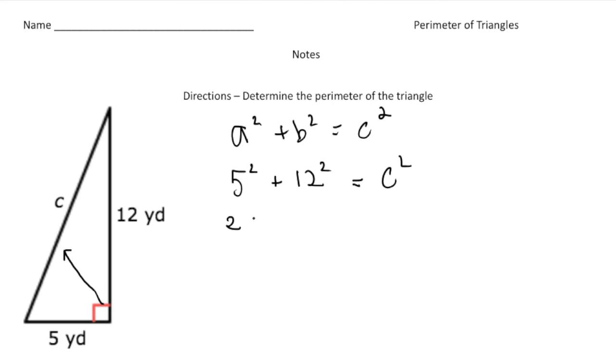And then 5 squared is 25 plus 12 squared is 144 equals C squared. And 25 plus 144 is 169 equals C squared. And then to find the value of C we need to square root both sides.